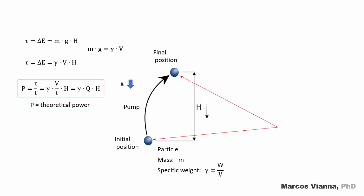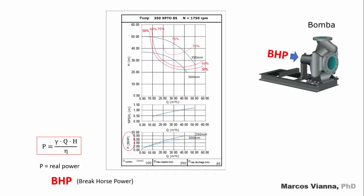Of course, the power that we'll find using this expression will be the theoretical power. To find the real power, we must know the efficiency of the machine that will perform the work. It's a number smaller than one. Note that it divides the theoretical power, so the real power will be greater than the theoretical power. This will be the power that we must supply to the axis of the pump. It is known as the brake horsepower, or in short, the BHP.